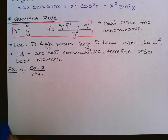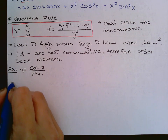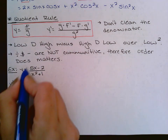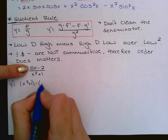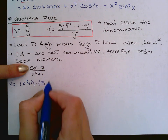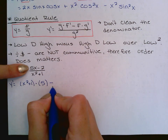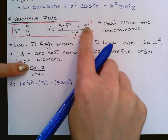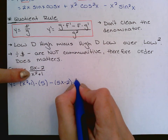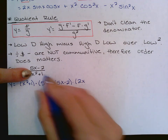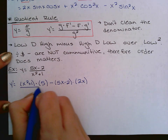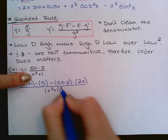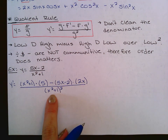For the first quotient rule example, Low is the denominator, D High is the derivative of the numerator: derivative of 5x is 5, derivative of 2 is 0. Minus High (the numerator), times D Low: derivative of the denominator is 2x, derivative of 1 is 0. Over Low squared: (x² + 1)². The denominator never needs to be cleaned.